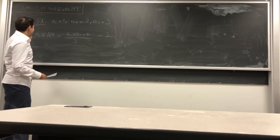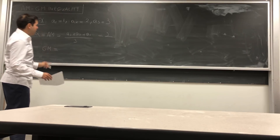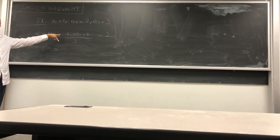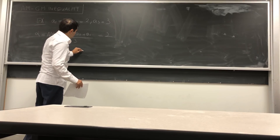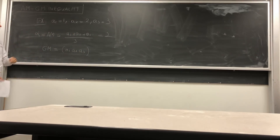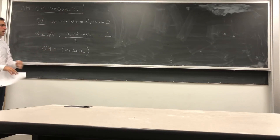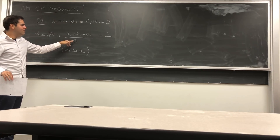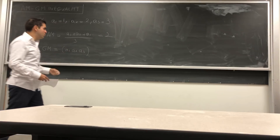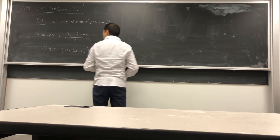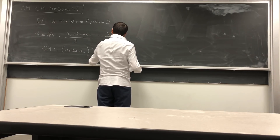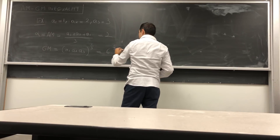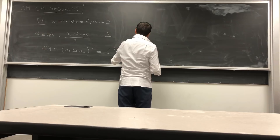It turns out there's another way of taking a mean, called the geometric mean. Instead of adding up the values you multiply them: a₁ × a₂ × a₃. This product can get very large, so instead of dividing by 3 you take the cube root — that is, the (1/n)-th power. Doing that gives 1 × 2 × 3 = 6, and the cube root of 6 is roughly 1.817.